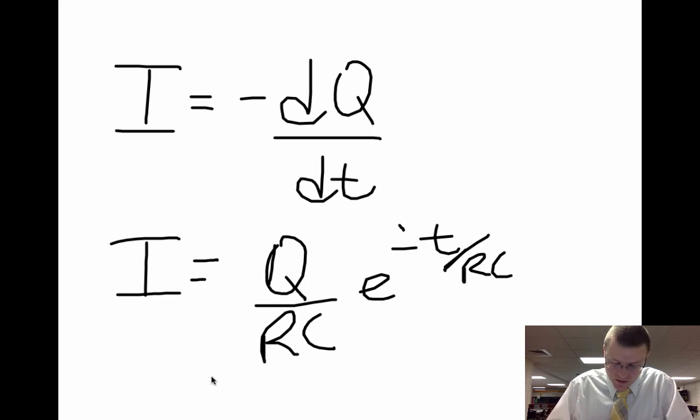The current's going to be some maximum value. When time equals zero, this whole function here goes away, and it goes to one, and you're left with Q over RC, which, if you remember, way back when we started this, we said that when the switch closes, if I want to find the current, I take the voltage over the resistance.